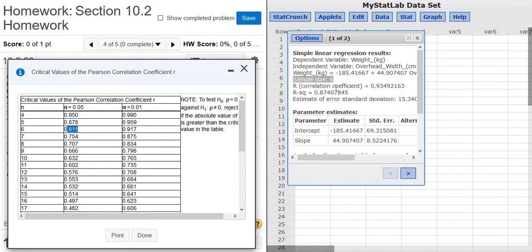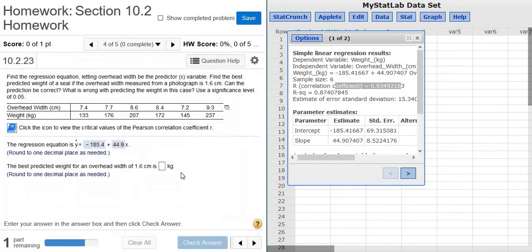So our correlation coefficient, which is r, is bigger than the critical value. That means r is significant. That means that the data follows a straight line pattern. So in other words, to make a prediction, we have to use the line.